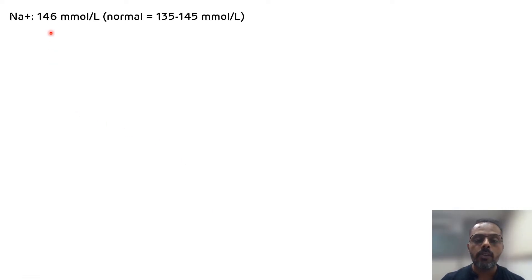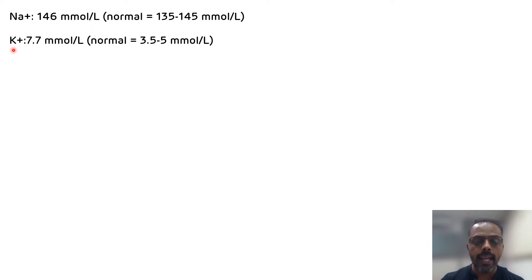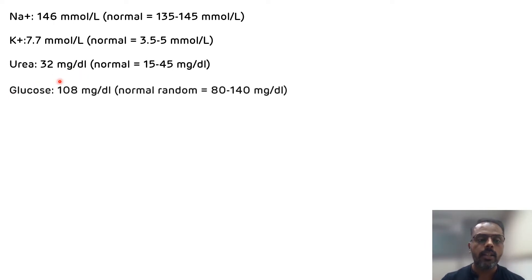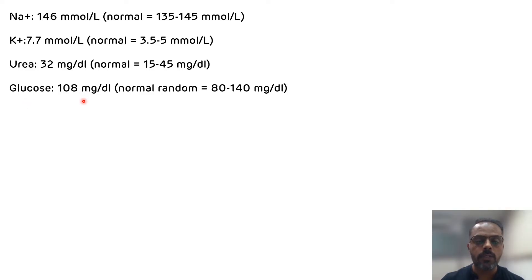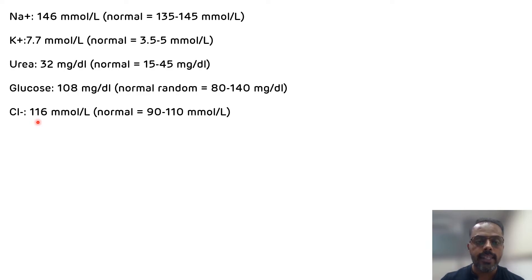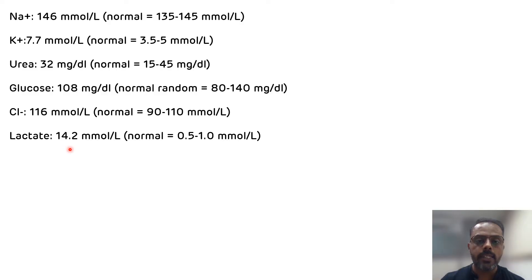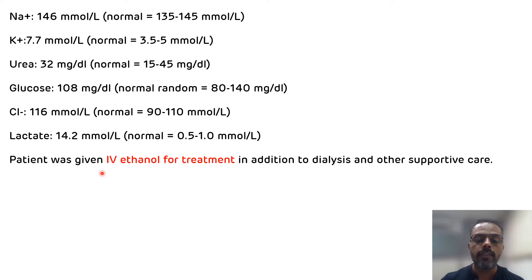Sodium level was 146 mmol per litre. Potassium level was elevated at 7.7 mmol per litre. Urea was normal at 32 mg per decilitre. Glucose was also normal at 108 mg per decilitre. Chloride was 116 mmol per litre. Lactate was elevated at 14.2 mmol per litre. The patient was given IV ethanol for treatment in addition to dialysis and other supportive care.